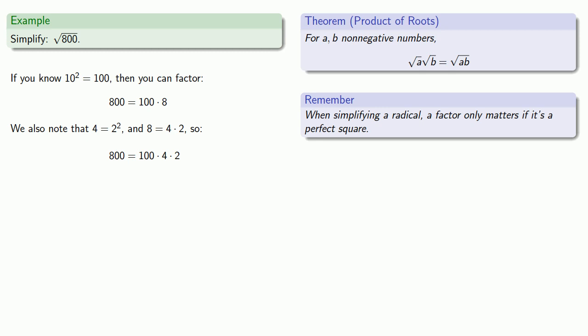Equals means replaceable, so anywhere I see 800, I can replace it with 100 times 4 times 2. So in our expression, square root of 800, we can rewrite it.